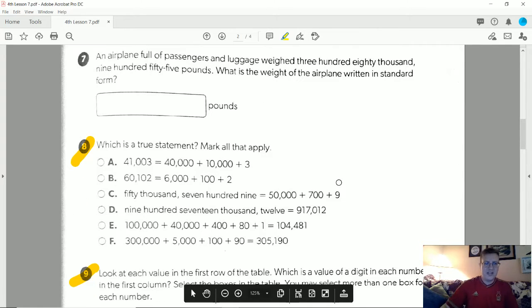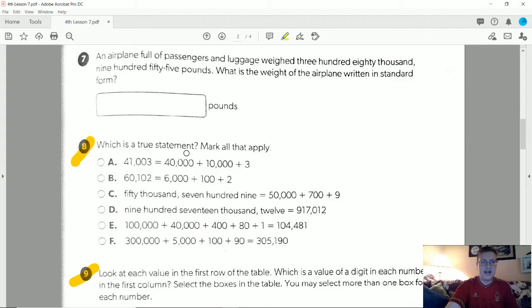Number eight, which statement is true? To start with, we have 40,000 plus 10,000, that would actually take us up to 50,000, so this one's not going to work. 60,000 equals 6,000, again that's not going to work. 50,709, so I have 50,709, so letter C would work.